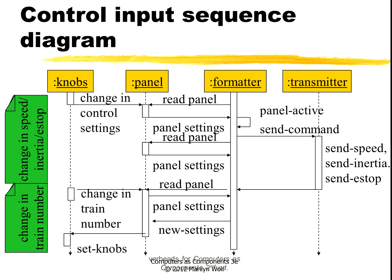Meanwhile, the panel keeps reading the knobs, and in this case nothing changed, so we don't have to actually do anything. Down here, the train number knob changed, which means that we have to set some values but we don't generate a new message. Then down here, we may have another message which will, farther on down below the bottom of this page, cause another message to be sent.